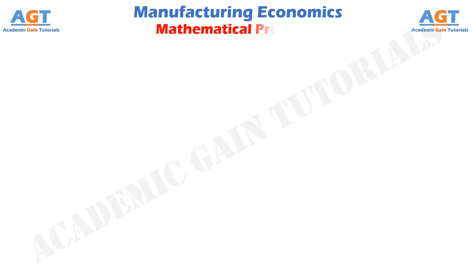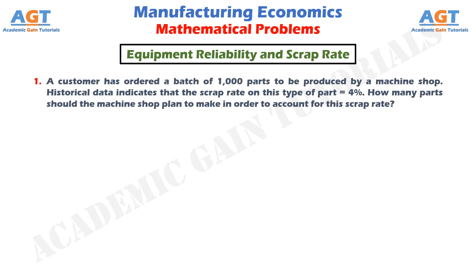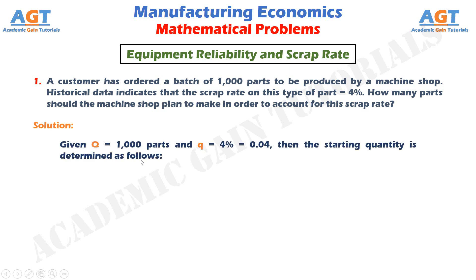Problem 1: A mathematical problem on equipment reliability and scrap rate. A customer has ordered a batch of 1000 parts to be produced by a machine shop. Historical data indicates that the scrap rate on this type of part equals 4%. How many parts should the machine shop plan to make in order to account for this scrap rate? Given: required quantity equals 1000 parts, and scrap rate equals 4% or 0.04.